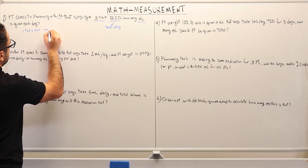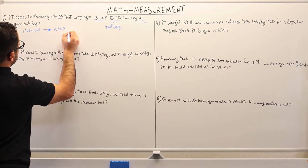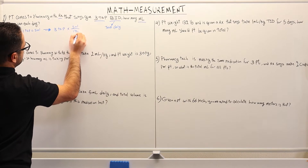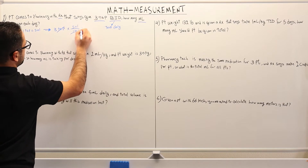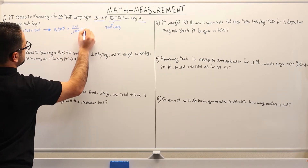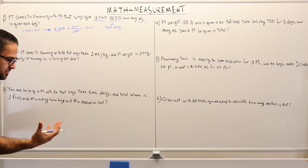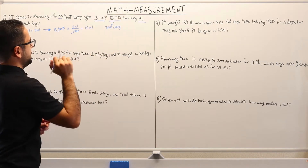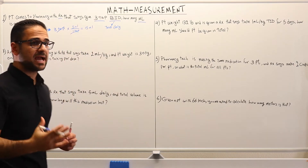So if we have three teaspoons, we multiply by five milliliters over one teaspoon. Taking teaspoons out, we have three times five, which is 15 milliliters. So this is for each dose that is given to the patient. But we have twice daily — BID.